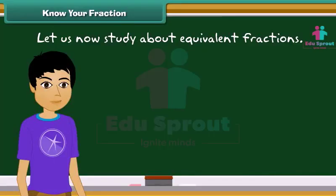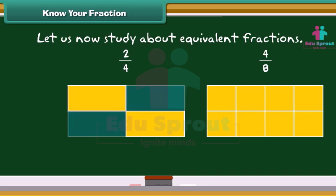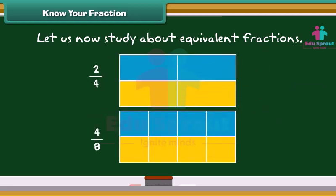Let us now study about equivalent fractions. Look at the rectangular boxes given below. In the first figure, two by four boxes are blue. While in the second figure, four by eight boxes are blue. Observe carefully. The blue colored parts of both the boxes are the same. This means two by four must be the same as four by eight. So, two by four and four by eight are equivalent fractions.